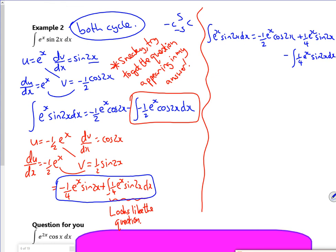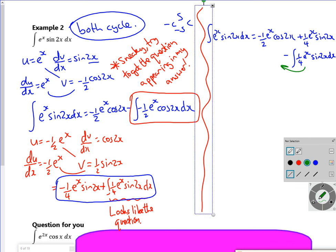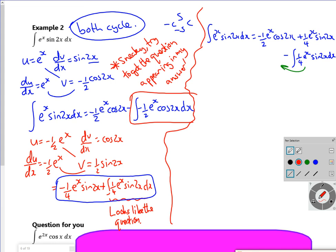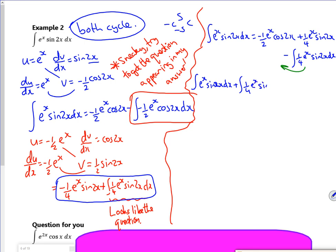Minus the integral of a quarter e to the x sin 2x dx. So what I do is, I get a little bit sneaky with what I'm doing. I'm going to put this bit on the other side now. So I've got the question on the other side. So I've got one lot of e to the x sin 2x dx plus a quarter lot of e to the x sin 2x dx is equal to minus a half e to the x cos 2x plus a quarter e to the x sin 2x.